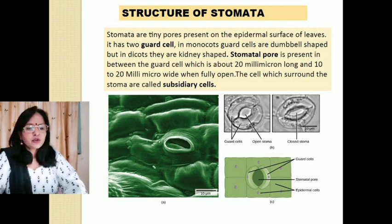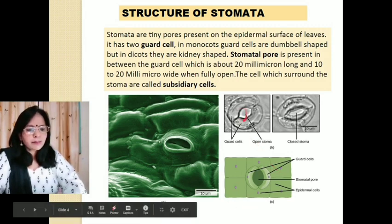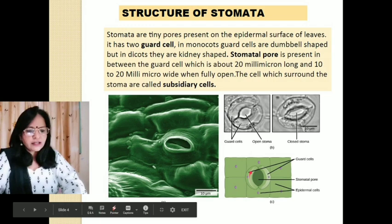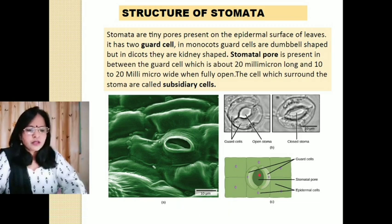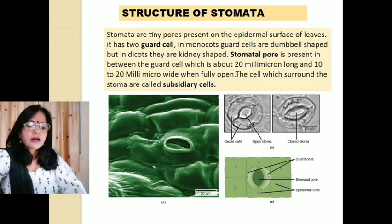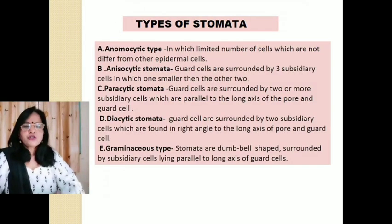When stomata is fully open, the guard cells are turgid. In a closed stoma, the guard cells are flaccid. You can see the picture of two kidney-shaped guard cells surrounded by a few epidermal or subsidiary cells, with the stomatal aperture in open condition.